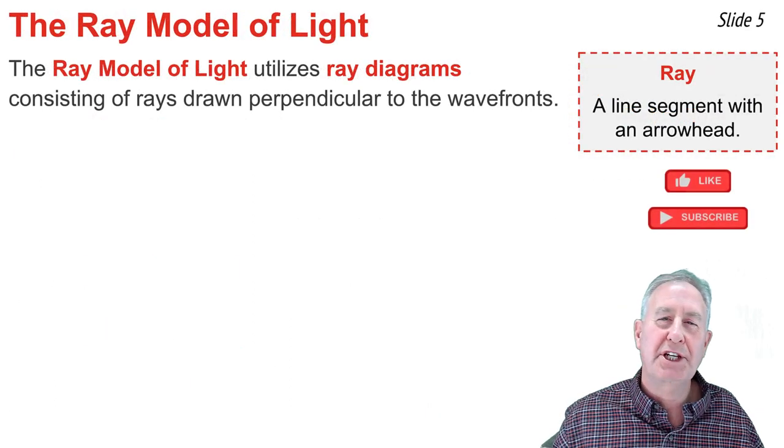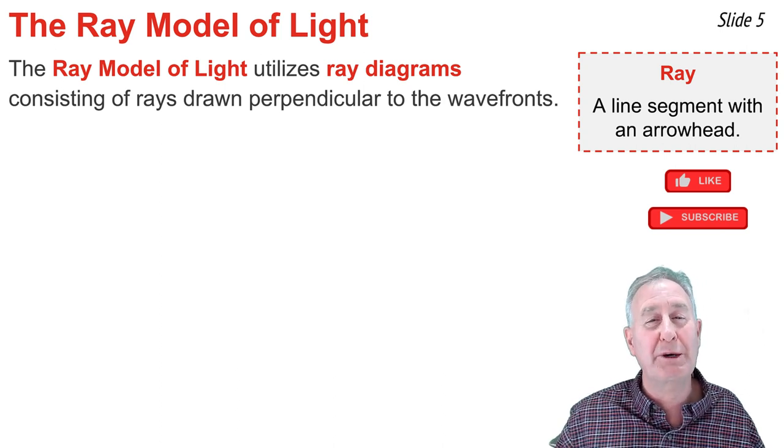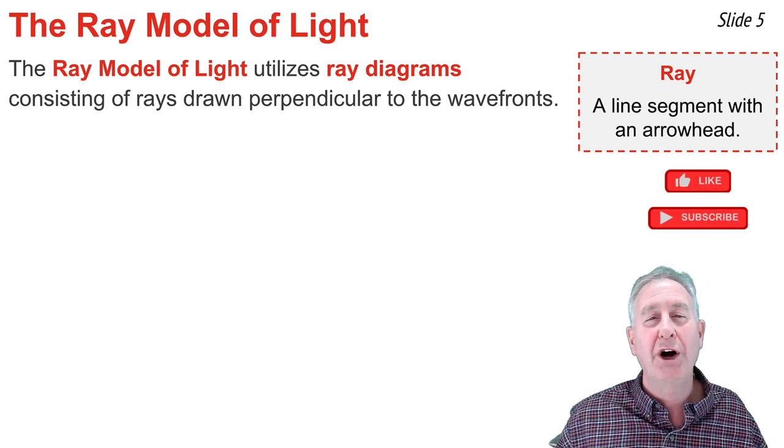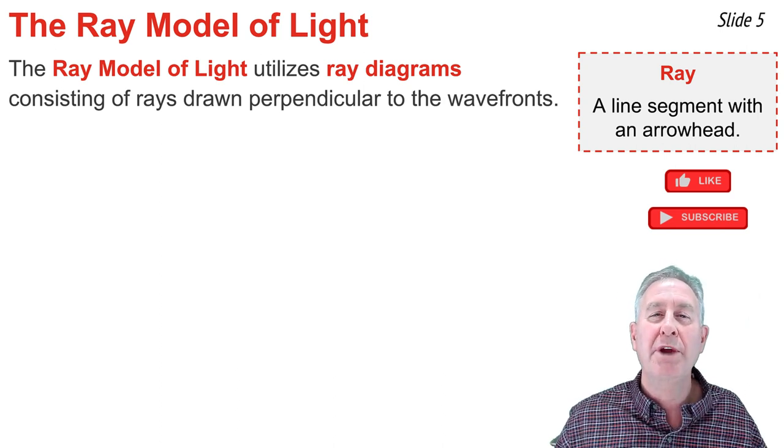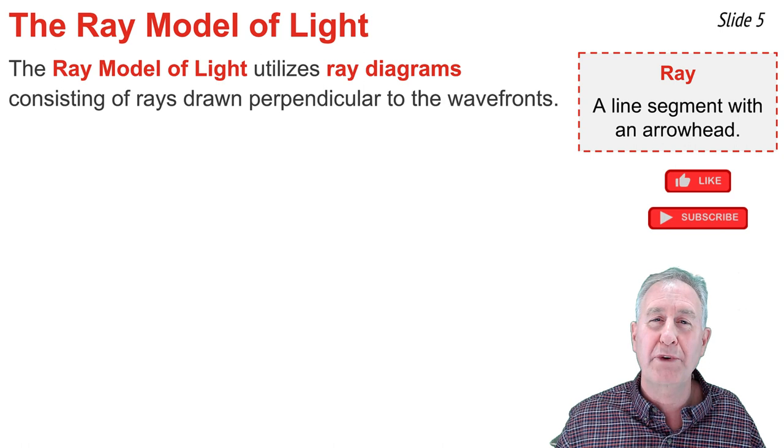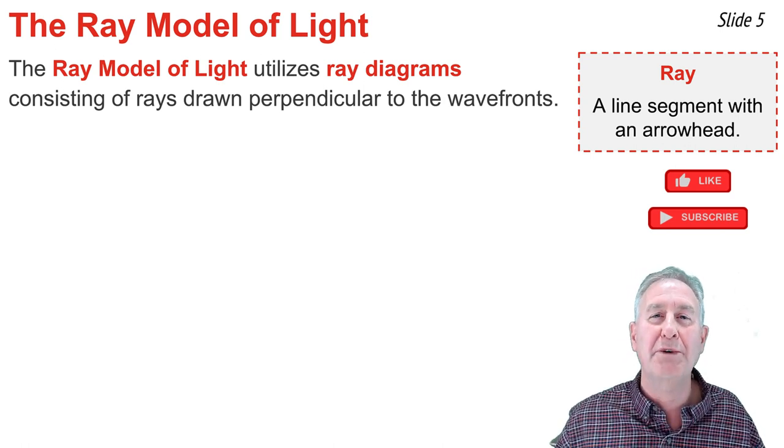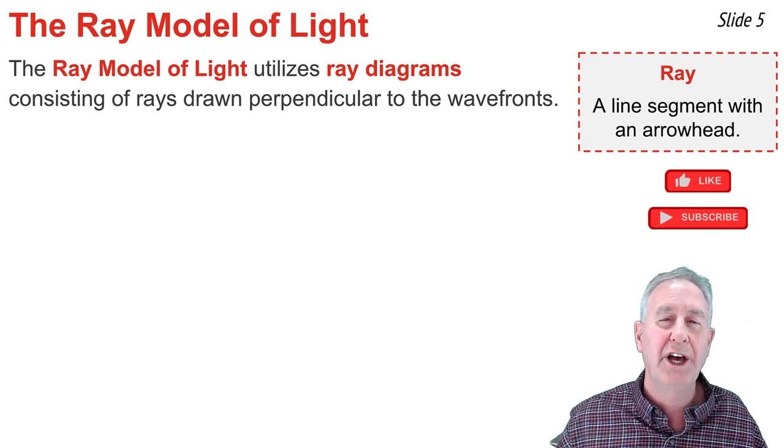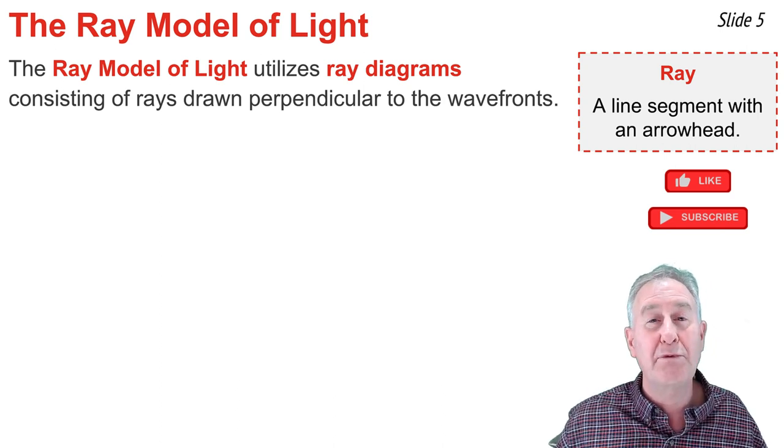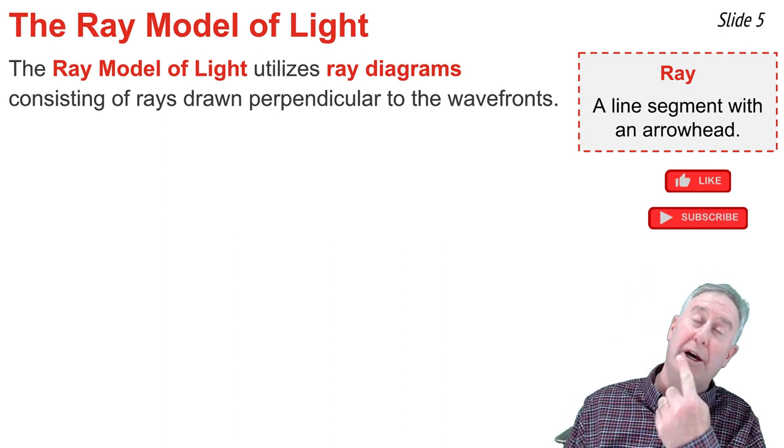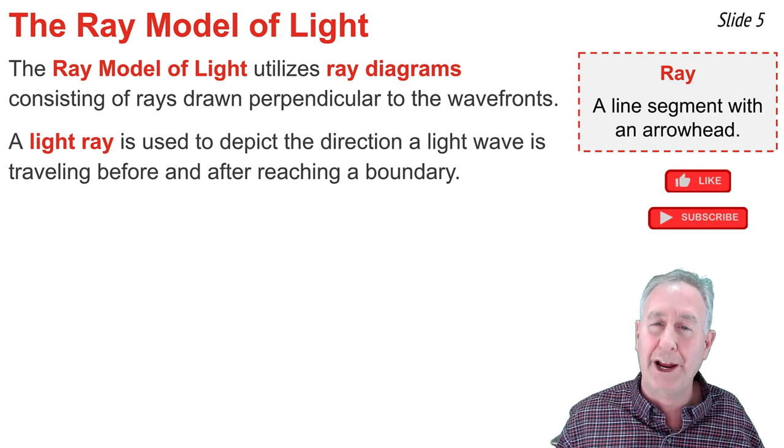In most units in physics, we employ some sort of model, a way of thinking about situations that arise in that particular unit. Our model for a unit on refraction and lenses is known as the ray model of light. The ray model of light makes heavy use of ray diagrams. Ray diagrams consist of rays which indicate the direction of travel of light waves. A ray is simply a line segment with an arrowhead at the end of it. If this were a unit on mechanics, we would probably refer to a ray as a vector. And like a vector, a ray indicates the direction, the direction of travel of light waves before and after they reach a boundary.